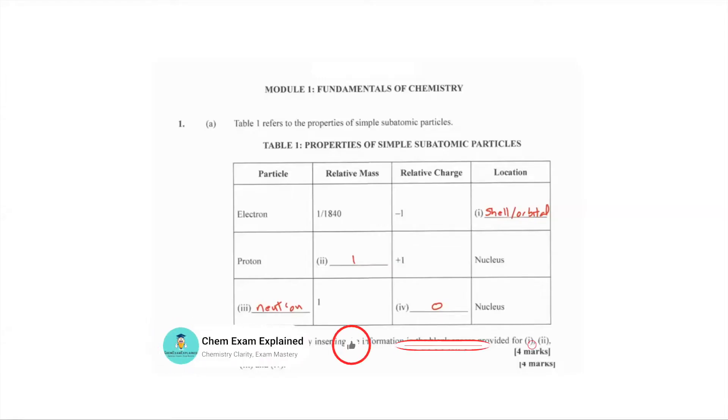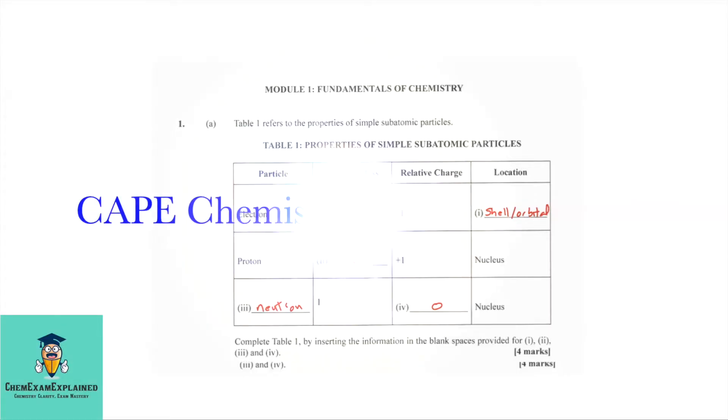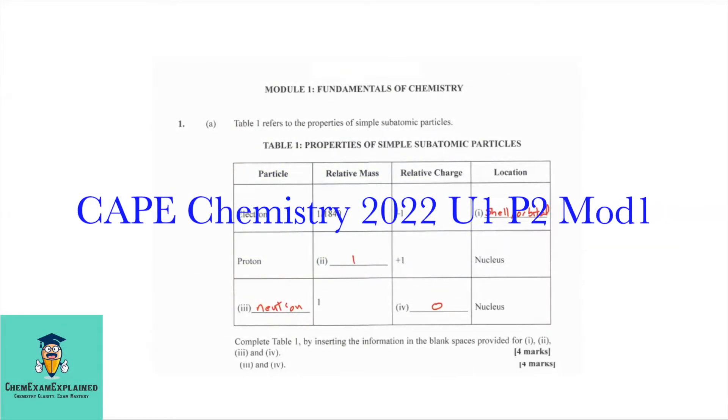Welcome back to ChemExamExplained, where the aim is chemistry clarity, exam mastery. In this video, we will be looking at K-Chemistry 2022, Unit 1, Paper 2, Module 1. Let's begin.